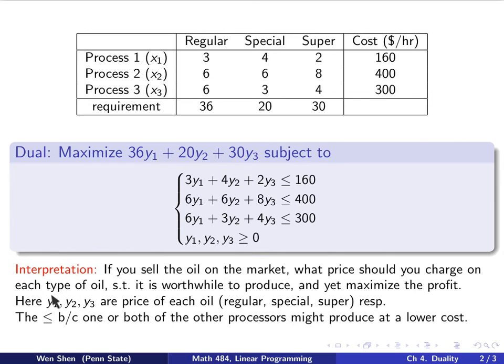Then the variables y1, y2, y3 would be the price of each oil. Y1 for regular, y2 for special, and y3 for super, respectively. And then, what would be the profit? The profit would be, this is what you would produce. You have to meet the requirement. So, 36 y1, 20 y2, 30 y3. That's what you would make. You want to maximize that, and then you have your constraints.